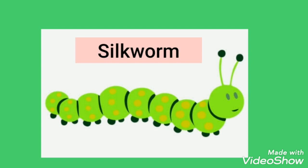Silkworms give us silk. This is not a caterpillar — it is a silkworm, though silkworms and caterpillars come from the same family. Silk is a fabric used to make clothes, for example silk sarees.